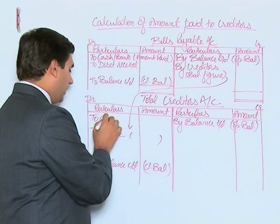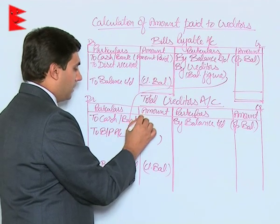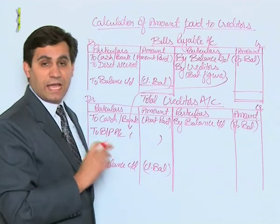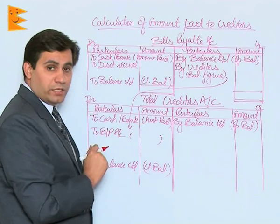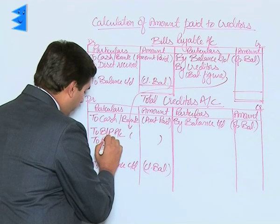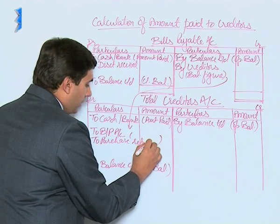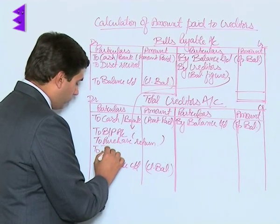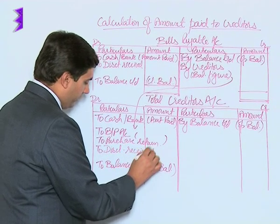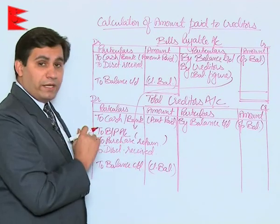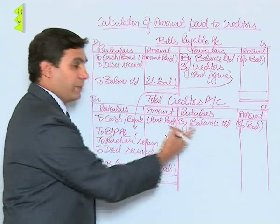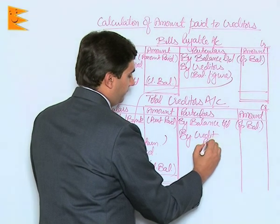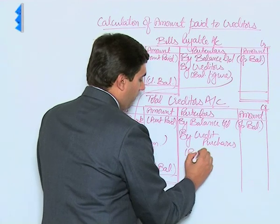Besides this, the entry would be 'to cash or bank,' that is the amount paid to creditors — the journal entry for this is creditors to cash or creditors to bank. Then 'to purchase returns,' since purchase returns lead to a reduction in the amount payable to creditors. Then we have 'to discount received.' The balancing figure, which will appear on the credit side, would be 'by credit purchases.'